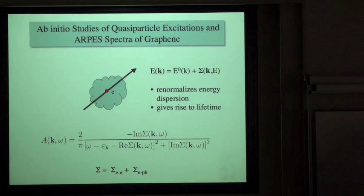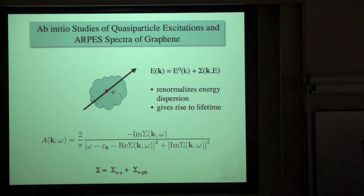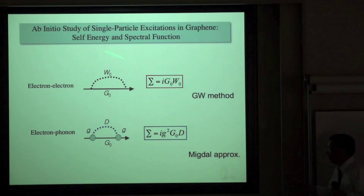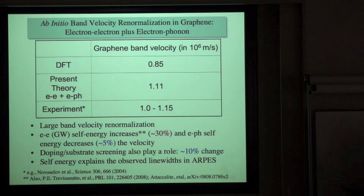To understand the photoemission experiment, we need to calculate the self-energy due to many-body interactions. For graphene, electron-electron and electron-phonon interactions are the dominant contributions. We carried out first-principles calculations using the GW method for electron-electron interaction and the Migdal approximation for electron-phonon interaction — with no adjustable parameters. In a DFT calculation, the band velocity of graphene is only 0.85 × 10⁶ m/s, which is significantly different from experiment.